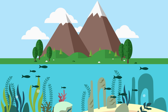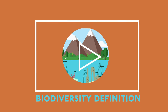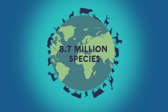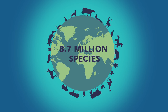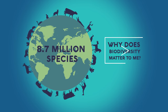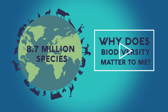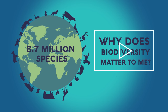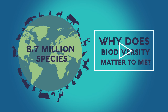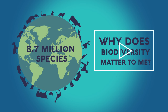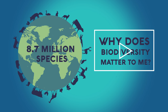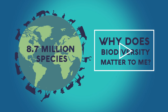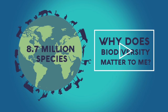Biodiversity is the variety of life, as we saw in this video. There are thought to be 8.7 million species on planet Earth. Biodiversity is of utmost importance to humans. The loss of one key species can have a detrimental impact on many levels, from other species of animals to plants to the physical environment, as shown by wolves.